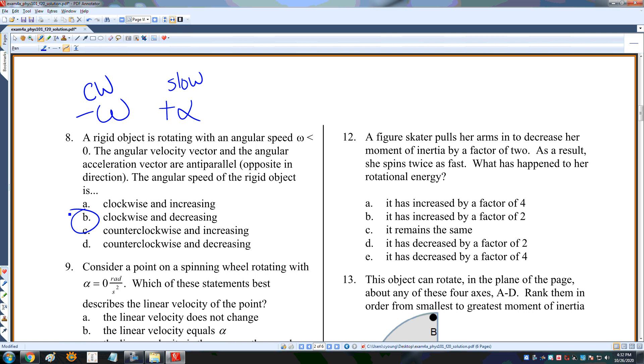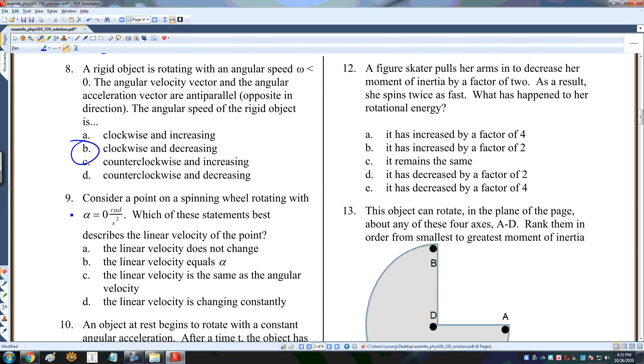Consider a point on a spinning wheel rotating with zero angular acceleration. Which of these statements best describes the linear velocity? As the object travels around a circle, the linear velocity is a vector in this direction. The linear velocity does not change is not true. The magnitude of the linear velocity is constant, but the linear velocity is constantly changing direction. It is changing constantly because the direction is changing constantly.